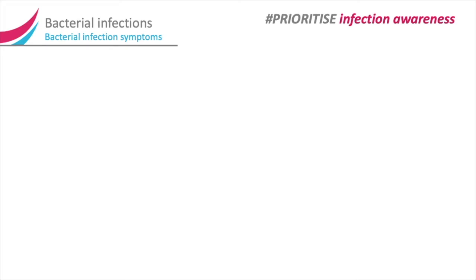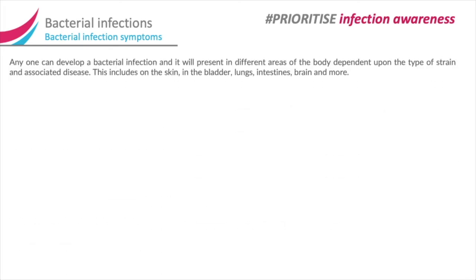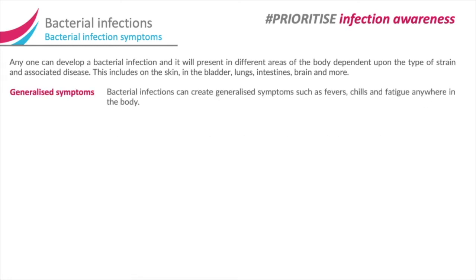Bacterial infection symptoms. Anyone can develop a bacterial infection and it will present in different areas of the body dependent upon the type of strain and associated disease. This includes on the skin, in the bladder, lungs, intestines, brain and more. Bacterial infections can create generalised symptoms such as fevers, chills and fatigue anywhere in the body.